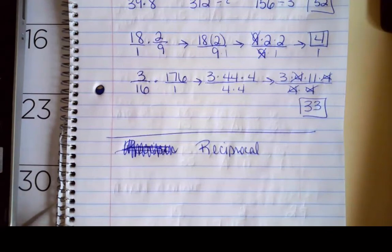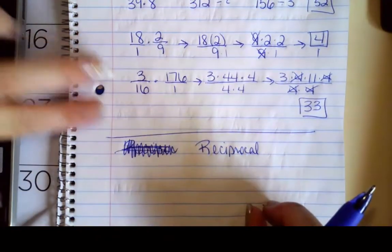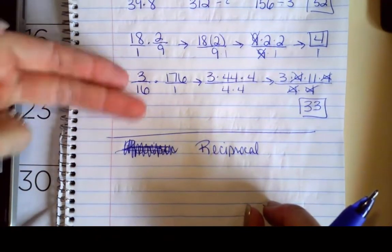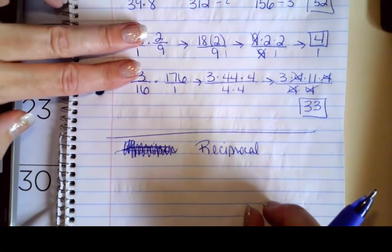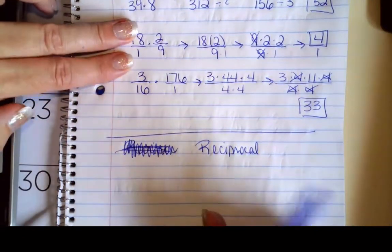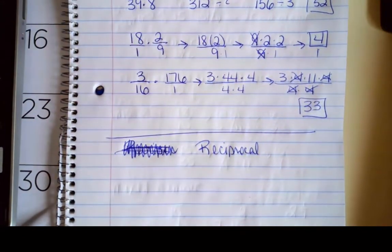So a reciprocal of a fraction means you literally just flip it. So instead of 3/16, it will be 16/3. Instead of 18 over 1, it'll be 1/18. And that is going to allow us to solve equations later on and also divide fractions.